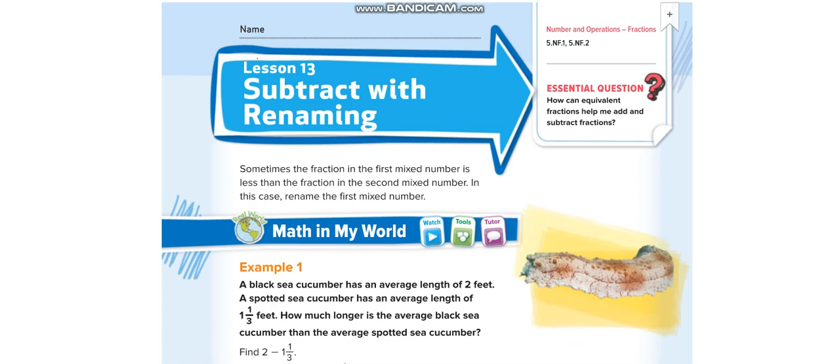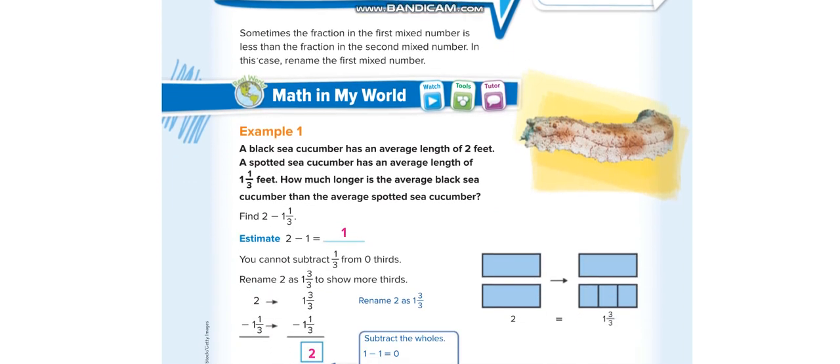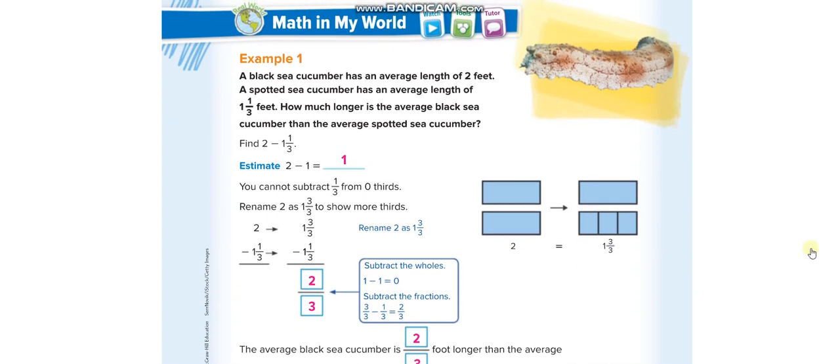Get ready to take the lesson. Let us start and solve the first example here. A black sea cucumber has an average length of 2 feet. A spotted sea cucumber has an average length of 1 and 1/3 feet. How much longer is the average black sea cucumber? When they say how much longer, you know that we have to find the difference. We have to subtract.